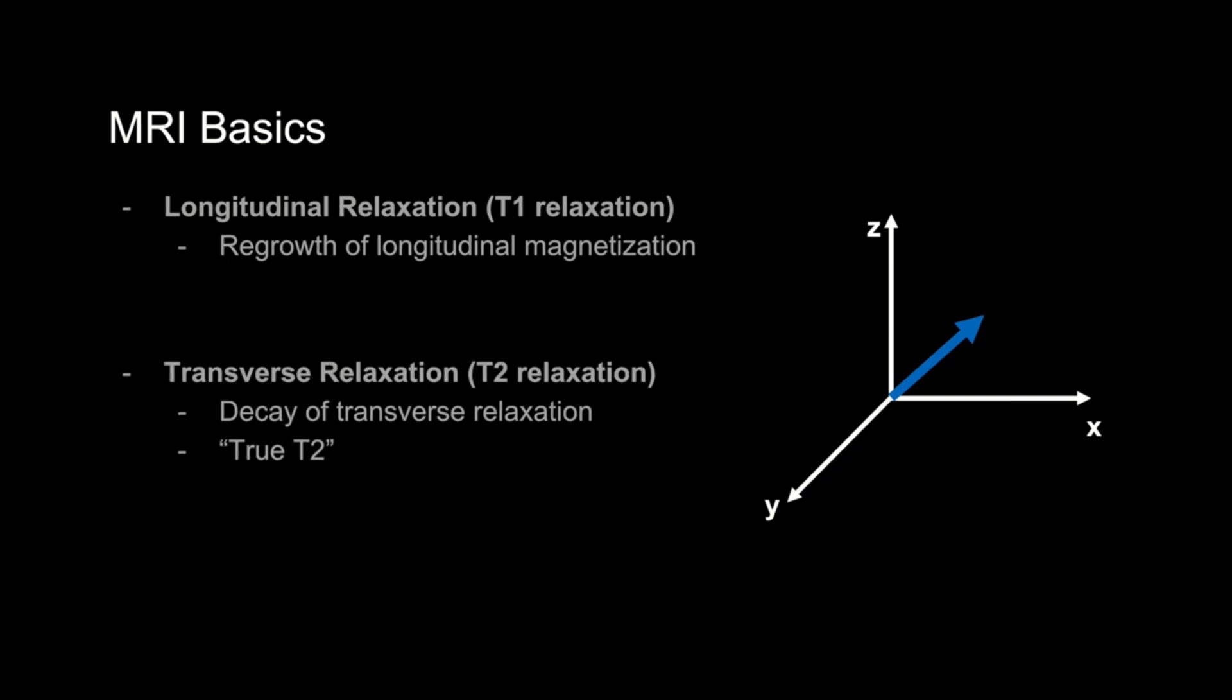A separate but related process is transverse relaxation or T2 relaxation. Remember, we also mentioned that after an RF pulse, not only do we tip the net magnetization into the XY plane, but the hydrogen nuclei also start to precess in the XY plane in sync. In order to maintain signal in the XY plane or in the transverse plane, the precessing molecules have to one, remain in sync as they precess and two, stay in the XY plane. So over time, the transverse signal goes away, which is called transverse relaxation, T2 relaxation, or T2 decay.